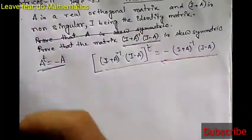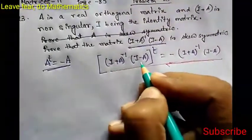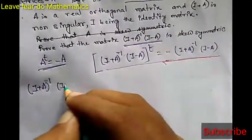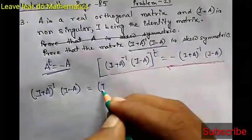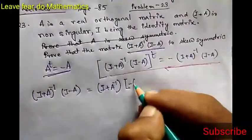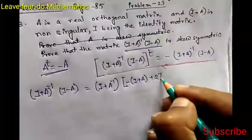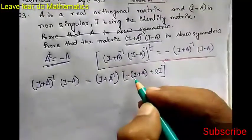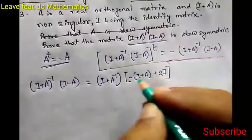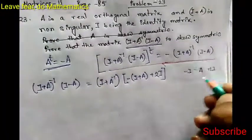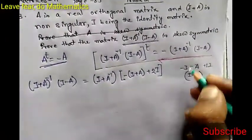We will first look at what (I plus A) inverse into (I minus A) looks like and how we can simplify it. I minus A can be written as minus of (I plus A) plus 2I. If you expand the bracket, this gives minus I minus A plus 2I, which equals minus I plus 2I minus A, that is I minus A. So I minus A can indeed be written as minus (I plus A) plus 2I.